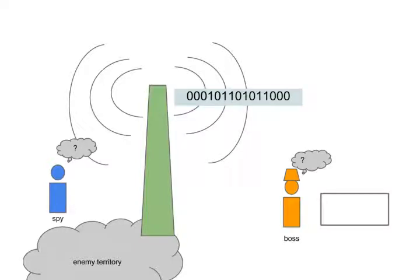Alright, now that you know the trick, let's see if you can decode a message yourself. So here's the message after it's been altered by the spy — the 15-bit code that you see in front of you. What I want you to do is figure out what message the spy was trying to send and type it into the box below.